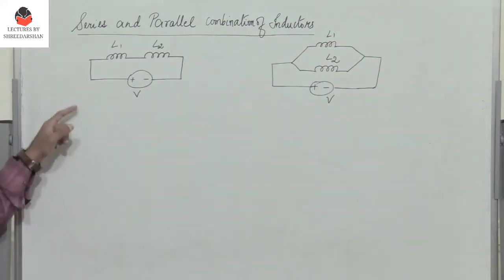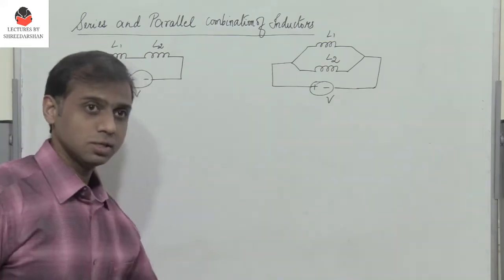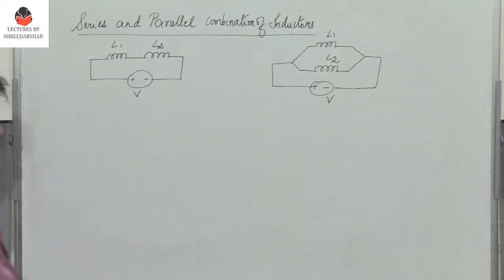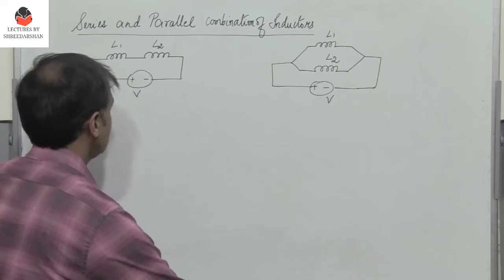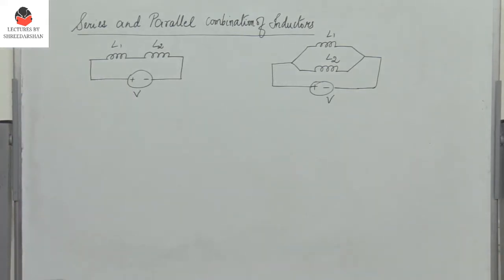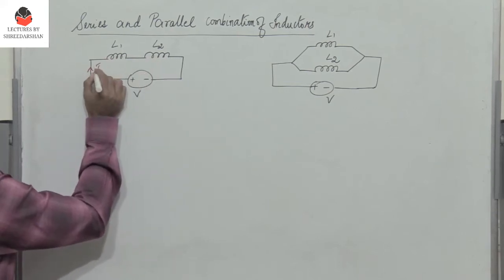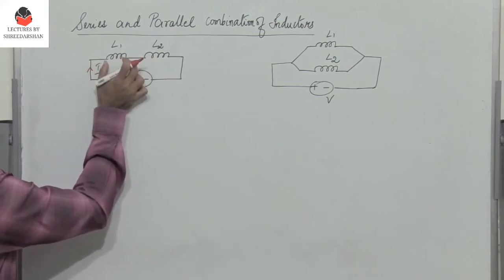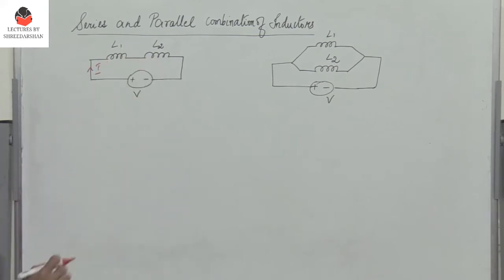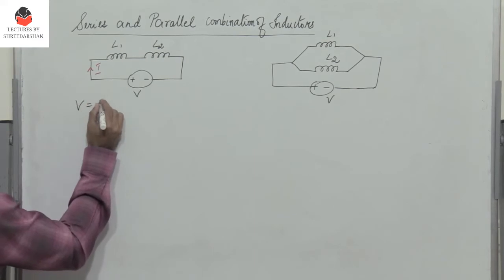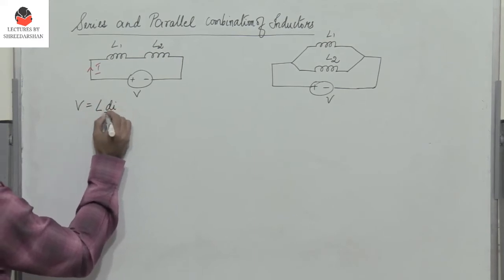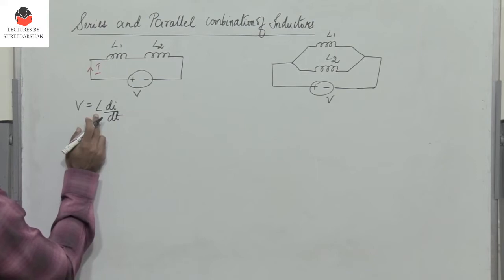Let us see how we can find the series inductance. Here I have two inductors L1 and L2 which are connected in series across the voltage V. When elements are connected in series, the same current I flows through inductor L1 and through L2. We know that the voltage V equals L times dI/dt.